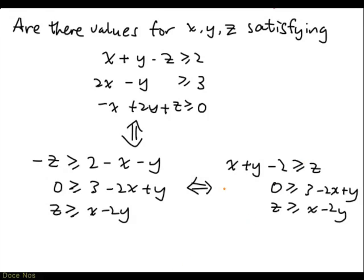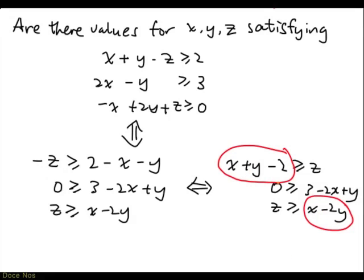Now, if this system had a solution, then x plus y minus 2 had better be at least x minus 2y. Because we need x, y, z such that x plus y minus 2 is at least z, but we also know z has to be at least x minus 2y. So we conclude that if there is a solution, x plus y minus 2 must be at least x minus 2y.